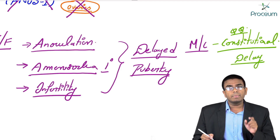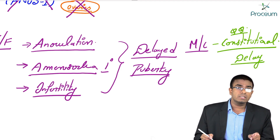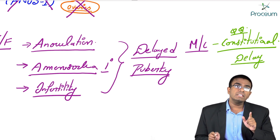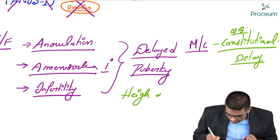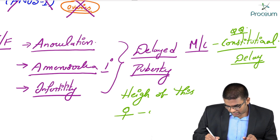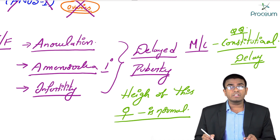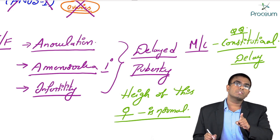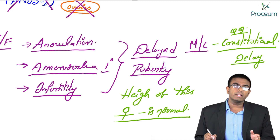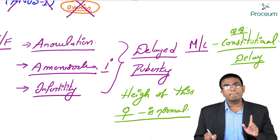In constitutional delay, please remember, if a female has delayed puberty because of constitutional reasons, her height will also be less — she is going to be short-statured. But if she has Kallmann syndrome, she will definitely have delayed puberty; however, in Kallmann syndrome the height of the female is normal. This is how you differentiate delayed puberty due to Kallmann syndrome from constitutional delay.